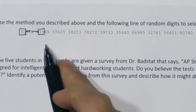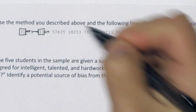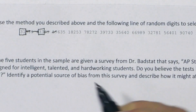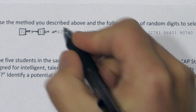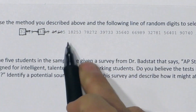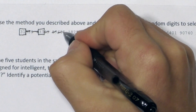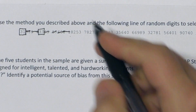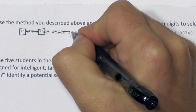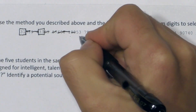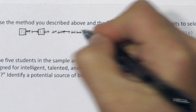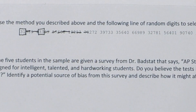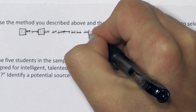Then here's 69 — too high. 57 also too high. Here's 63, also too high. 51 again too high. 82 again too high. 53 — too high. 78 — too high. Here's 27, we'll take that.